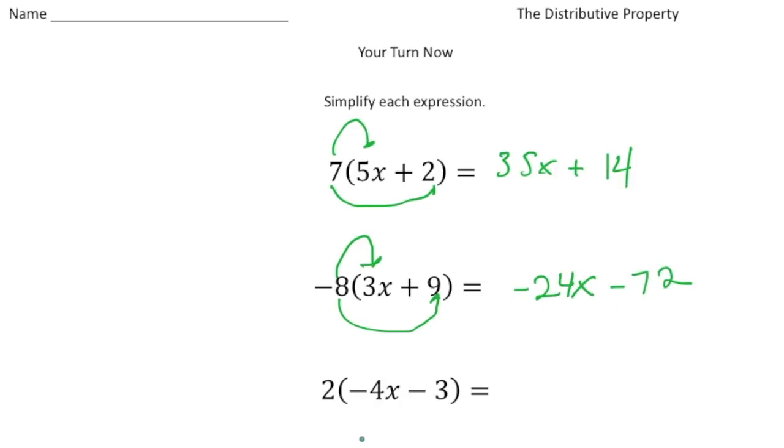And then finally, we have two groups of negative 4x minus three. Well, two times negative 4x, that'll give us a negative 8x. And then two times negative three, that'll give us a negative six. And there it is. All right. How'd you do?